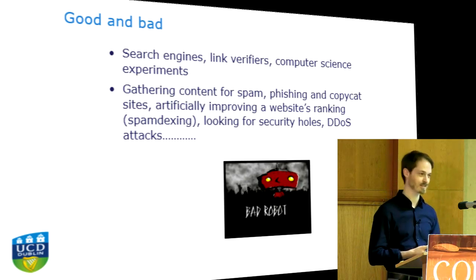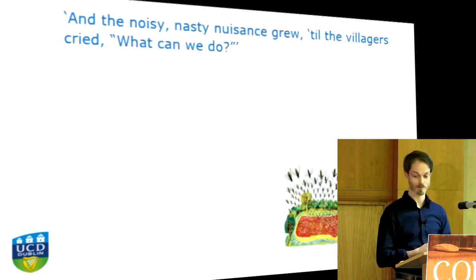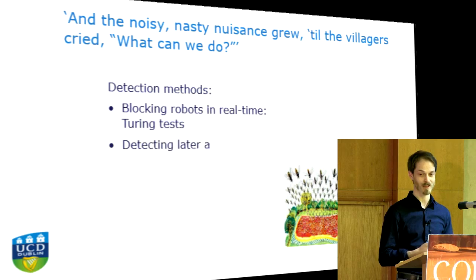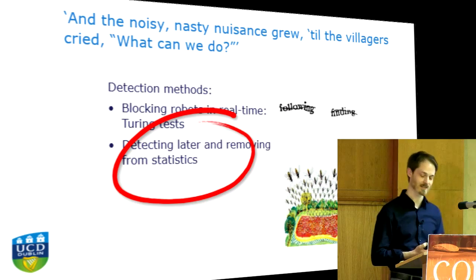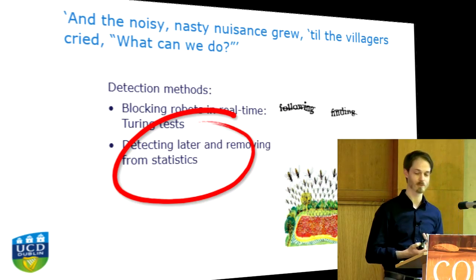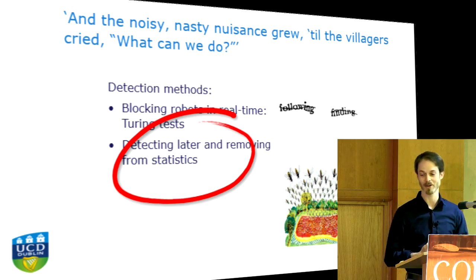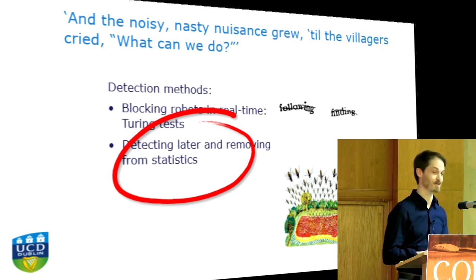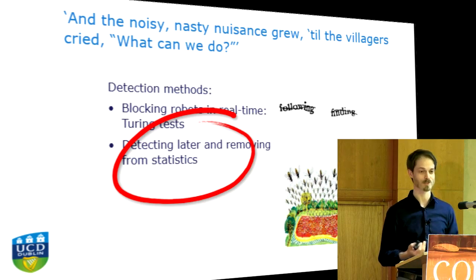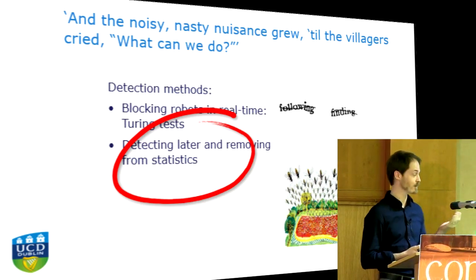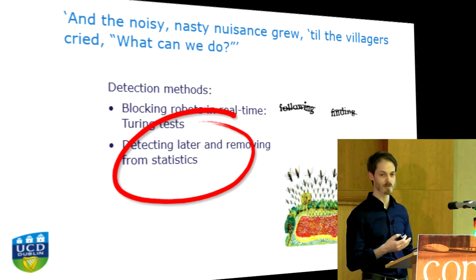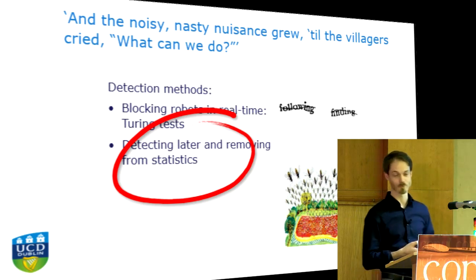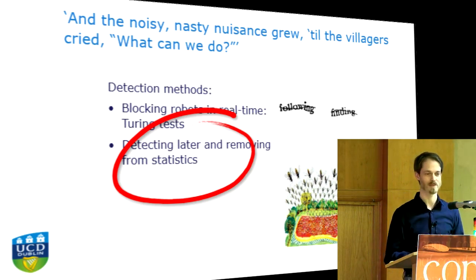The good news is there are detection methods. One you're probably familiar with is a Turing test — you've all done a CAPTCHA. This is, strange as it may sound, a humanity test: if you pass, you're a human. We don't think this is appropriate for institutional repositories. Imagine filling in a CAPTCHA whenever you wanted to download a PDF. So our options are limited to detecting later — crawling or reading through our logs and removing robot downloads from the statistics.